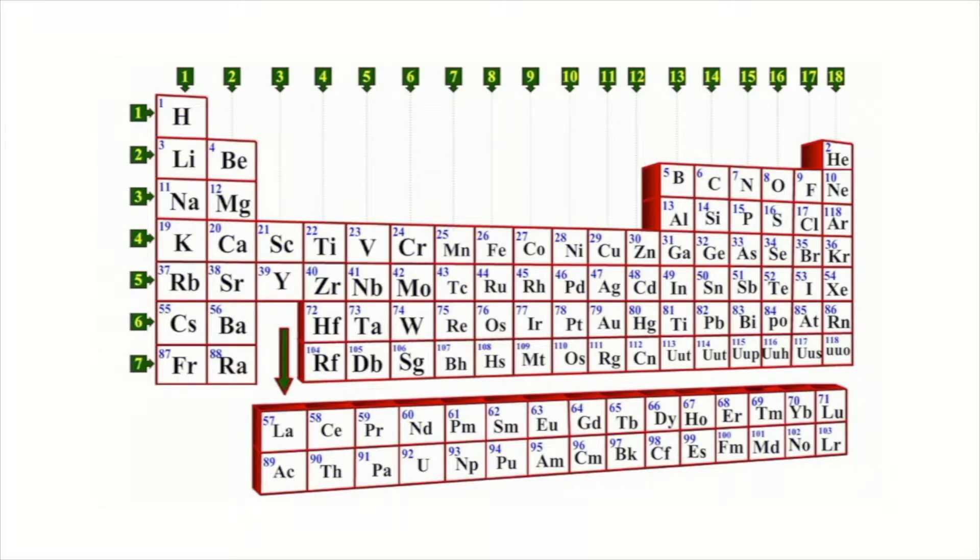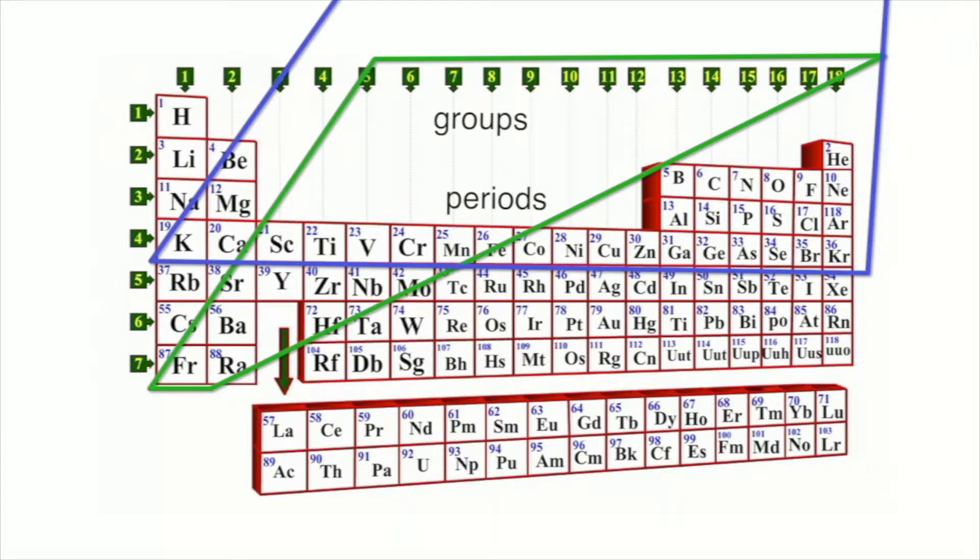How do we know which elements follow the octet rule? The periodic table is arranged into rows called periods. The columns are called groups. The groups indicate an element's key characteristics and whether it will follow the octet rule.